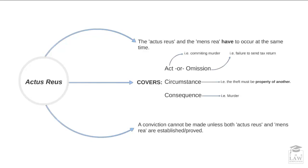Circumstance is, for instance, the component of property being of another person in relation to theft, the definition of which we will look at shortly. The consequence aspect is also covered by actus reus — as in murder, or the death itself. A conviction cannot be made unless both the actus reus and the mens rea elements are established and proved.